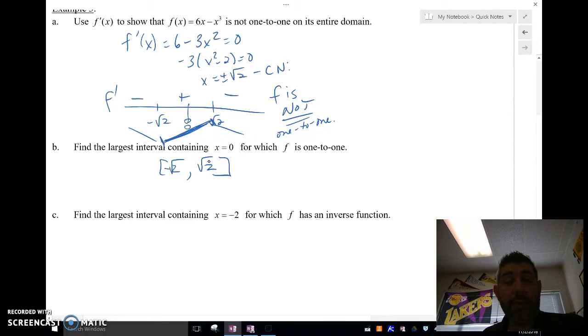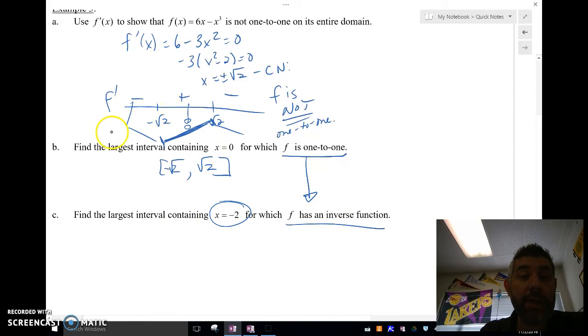Find the largest interval containing x equals negative 2 for which f has an inverse. Remember that if f is one-to-one, then f has an inverse. So where is f one-to-one such that x is equal to negative 2?